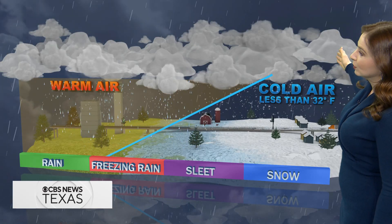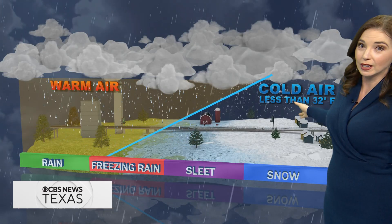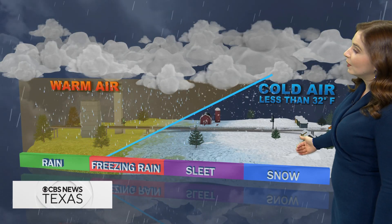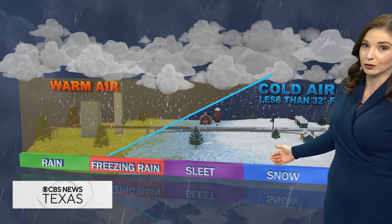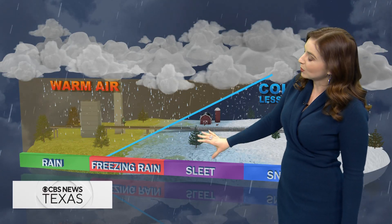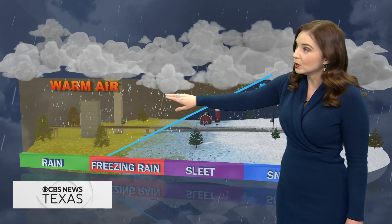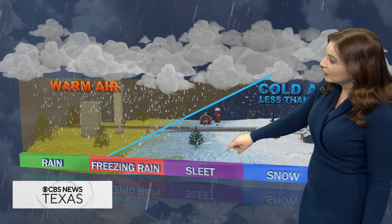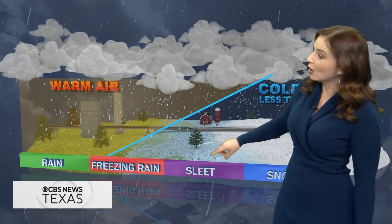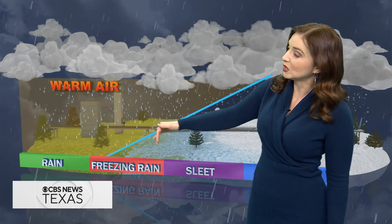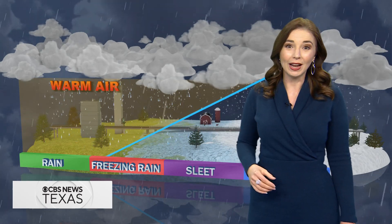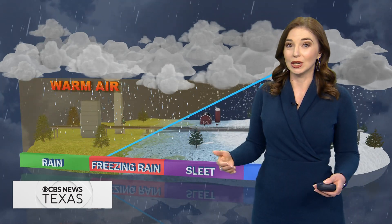Up along the Red River, that's where we have more cold air basically through that whole column of air, so that's why they're looking at snow. Then as we get towards I-20, that's where we're kind of getting into this wintry mix where we could see some of that warm air aloft, giving us a mix of sleet and snow. Further south into central Texas, they're looking at some sleet, some freezing rain, and even rain as temperatures continue to warm.